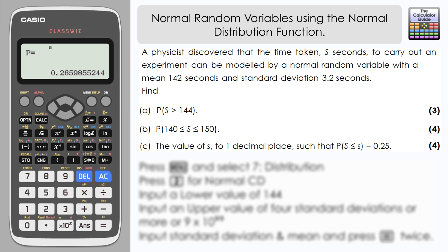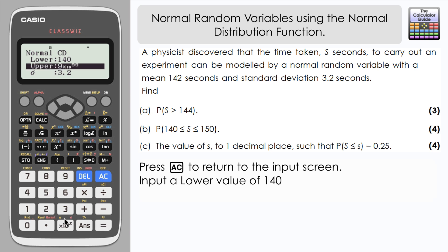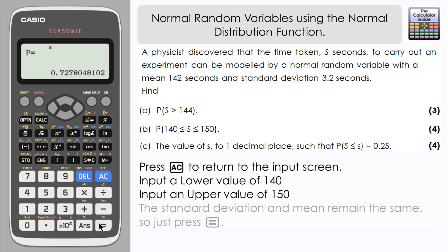For part B, we've got to find the probability that our time in seconds is between 140 and 150. Press AC to go back to the input screen. This time our lower limit is 140. Press equals and then our upper limit is 150. The other two features remain the same. We've still got a sigma of 3.2 and a mean of 142. Here we have the probability of S being in between the range of 140 and 150 seconds. It's 0.7278 to four significant figures.